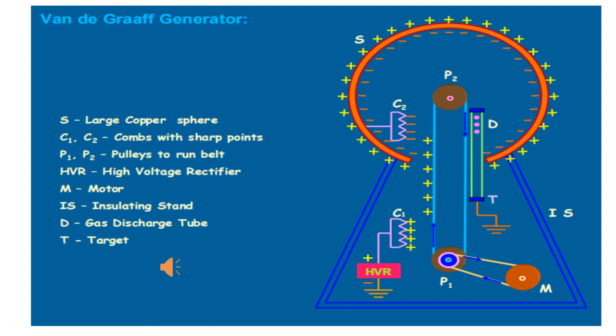The belt, made ascending by electric motor and pulley, carries these charges in the upward direction. The comb C2 is induced with negative charges, which are carried by conduction to the inner surface of the collecting sphere through a metallic wire, which in turn induces positive charges on the outer surface of the dome.